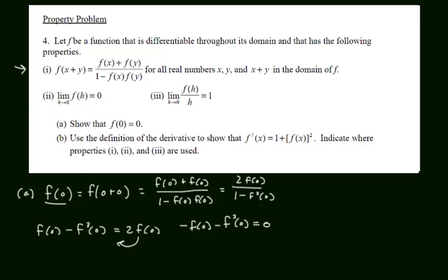So we have negative f of 0 minus f cubed of 0 equals 0. I'm going to multiply both sides by negative and factor out f of 0. And then by the 0 product property, f of 0 equals 0 or 1 plus f squared of 0 equals 0.